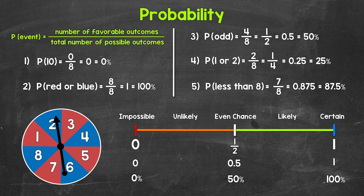We are going to use this spinner right here for our probability examples. So if we spin the spinner, we're going to look at the probability of where it lands. You'll notice there are eight equal-sized sections on the spinner, so each section has an equal chance of being landed on. Remember, we can use the probability formula: P for probability of an event equals the number of favorable outcomes over the total number of possible outcomes.